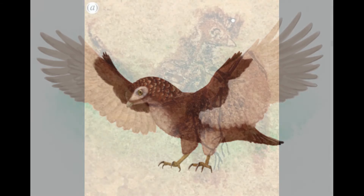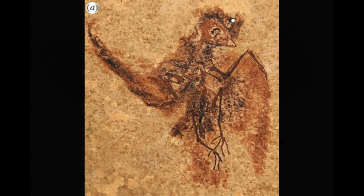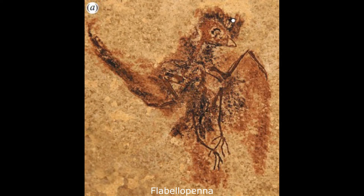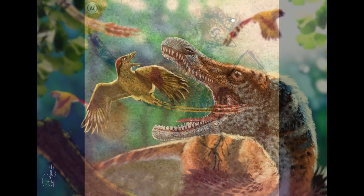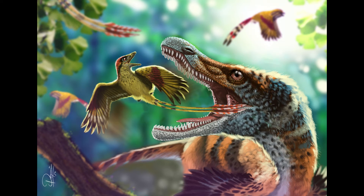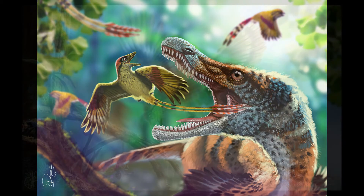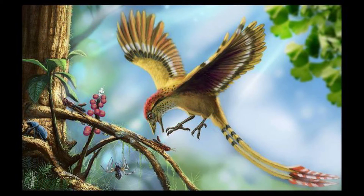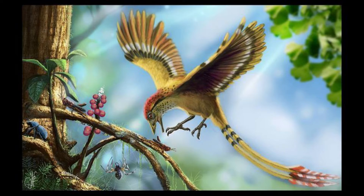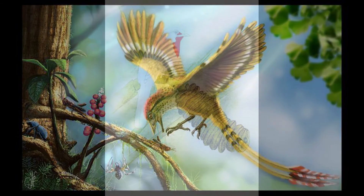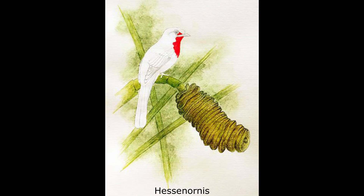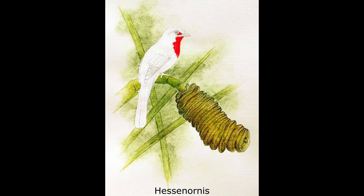One potential prey item for Aradon would have been Flabella penna, a sparrow-sized insect-eating enantiornithine bird known from several spectacularly well-preserved specimens. Thanks to the superlative preservation of Messel's fossils, we know that this small bird had two long, ribbon-like tail feathers likely used for display. Like almost all enantiornithines found at Messel, Flabella penna appears to have been adapted for a life in the trees. Some species, such as the trogon-like Hesonornis, possessed a heterodactyl toe arrangement ideal for gripping and climbing about in the canopy.